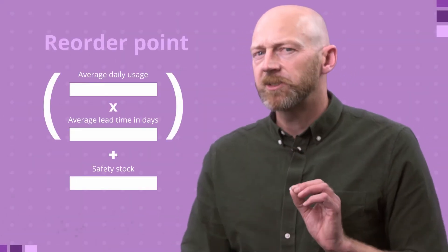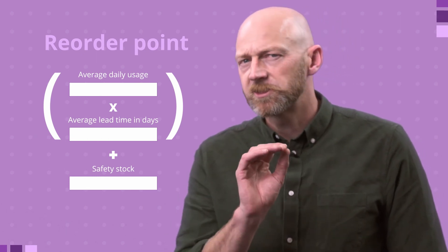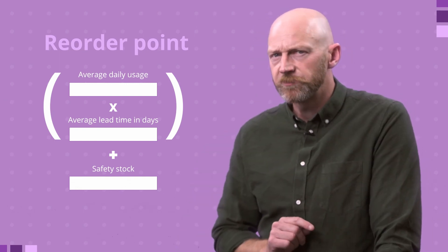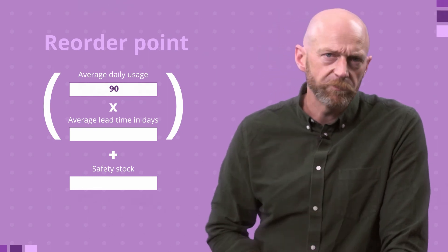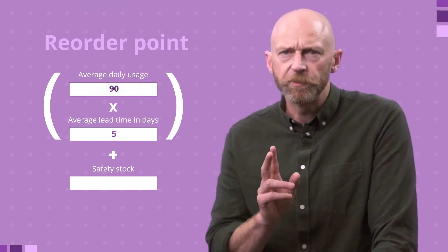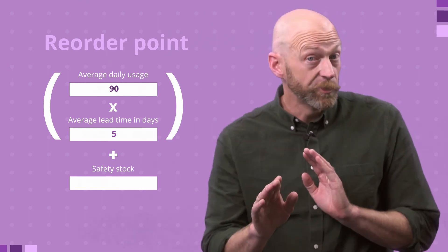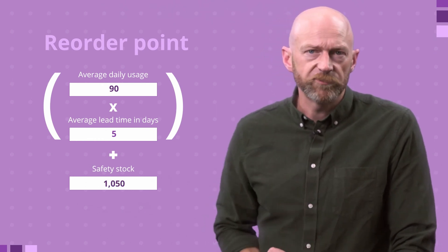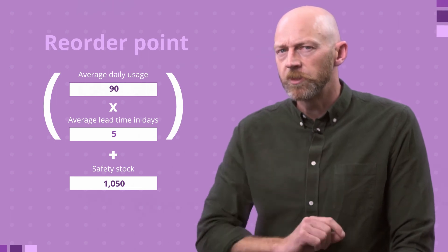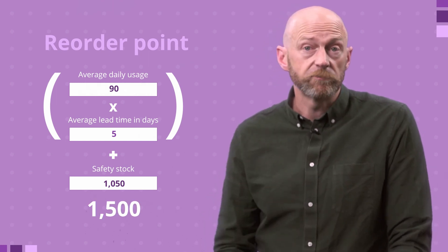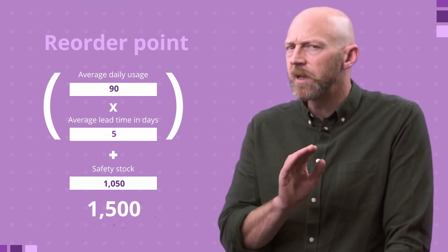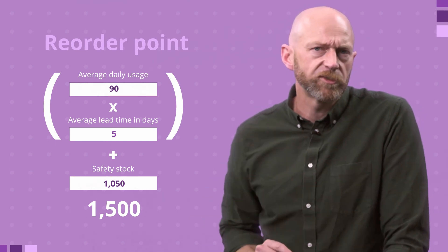Now we take that safety stock number to our reorder point formula. Again, there's a calculator on that same page, and we take the same data and calculate it slightly differently. This time, we take our average daily use of 90 screws per day, multiply it by that average lead time of 5 days — that's how long it takes for those screws to arrive and be ready to use from when we first place the order — and then we add our safety stock figure of 1,050 screws, which gets us a reorder point of 1,500. So there we have it: we now know that even if our order takes the longest it's ever taken to arrive, we shouldn't run out if we place our order when there's only 1,500 left in the warehouse.